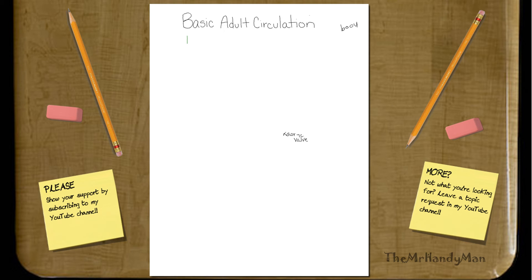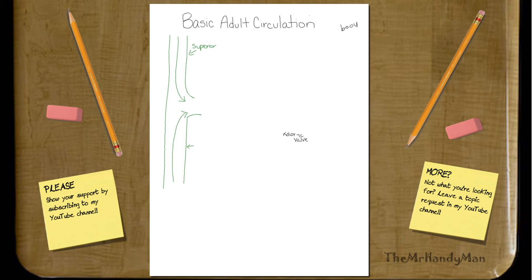We're going to start with blood coming into the heart from the superior and inferior vena cava. Deoxygenated blood is coming back to the heart — this is venous blood, meaning it is not oxygenated. This is blood that has gone through your body, all of the cells have taken the oxygen, and it is now coming back to the heart to become re-oxygenated.